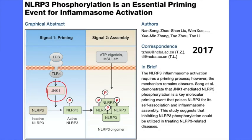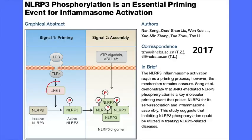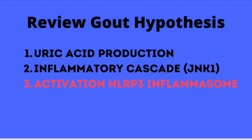The third part of our hypothesis was the activation of the NLRP3 inflammasome. JNK1 is a transcription factor that is expressed during the metabolism of alcohol and fructose. A recent publication clearly connects the expression of JNK1 with the initiation of the NLRP3 inflammasome. So in our gout hypothesis, all three criteria are now connected: the formation of uric acid, the initiation of the inflammatory cascade, and the connection between the inflammatory cascade and the initiation of the inflammasome — all required for a gout flare.